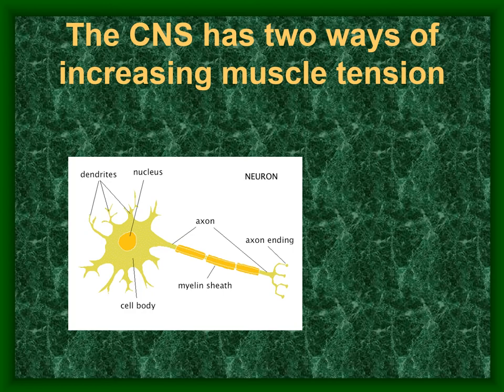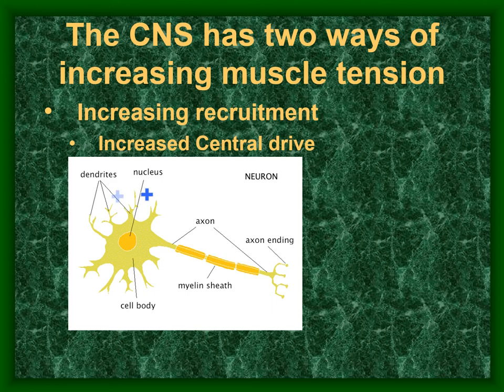Whether an alpha motor neuron depolarizes is determined by the summation of hundreds of inputs it receives — some facilitatory, some inhibitory. When the total summation reaches threshold, the alpha motor neuron recruits. The total facilitatory signal from the CNS is called central drive, which increases the number of motor units called into action — this is recruitment.